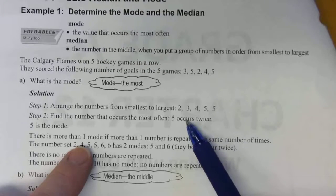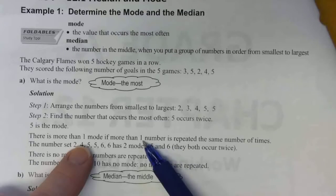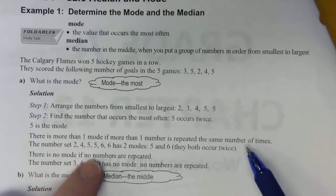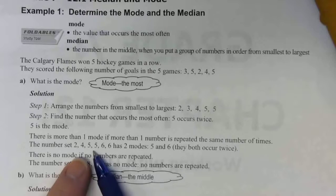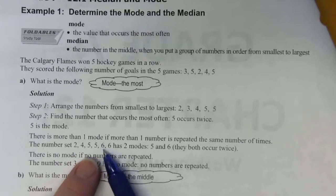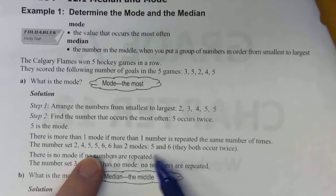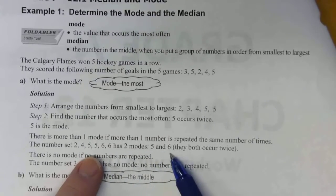If there was more than one mode—there's more than one mode if more than one number is repeated the same number of times. For instance, in this set of six numbers, we've got two fives and two sixes. They both occur twice, so we can have two modes. Five and six are both modes.